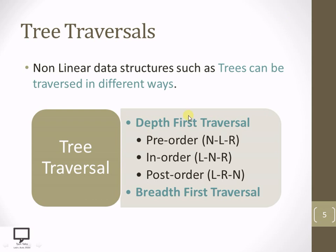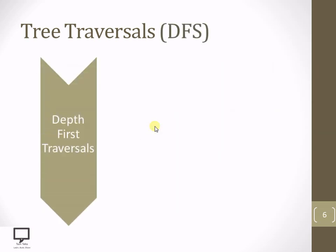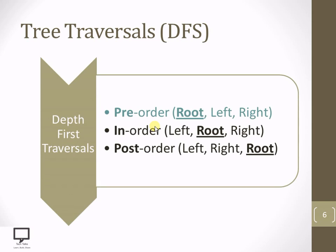Let's start with pre-order traversal. In depth first traversal, we have different techniques: pre-order traversal, in-order traversal, and post-order traversal. In pre-order traversal, we first process the root node, then the left child, and then the right child. That is why this is called pre-order traversal.